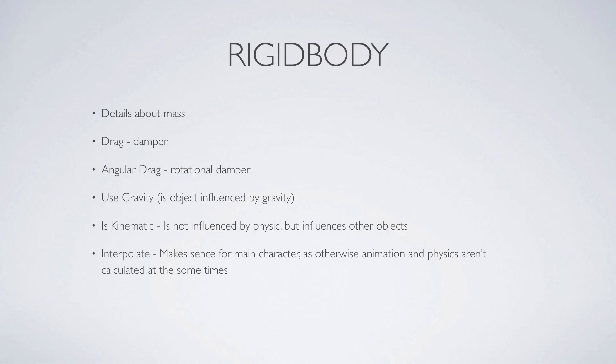What interpolate does is it uses more resources in order to really make sure that the physics and animations work together quite well. That's not as important for other objects as it is for the main character. Then you have the collision detection and finally the constraints, which allows us to freeze the position and freeze the rotation.